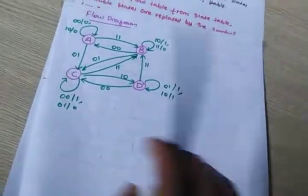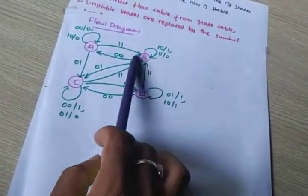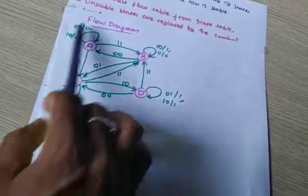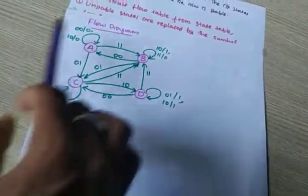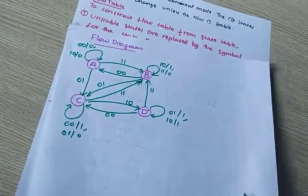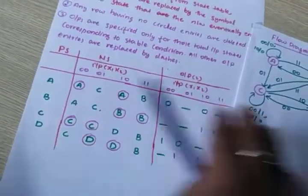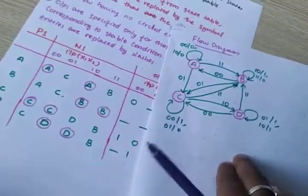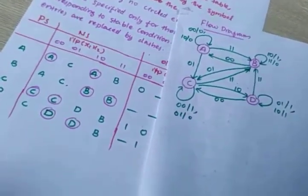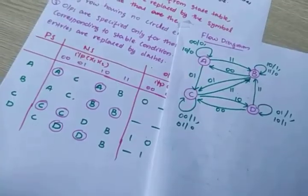So B with 0,0 goes to A. Like that, you completely fill up this table. You can draw this entire table and map it to the flow diagram. This is the procedure.